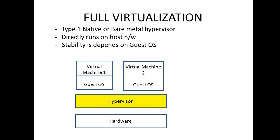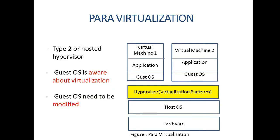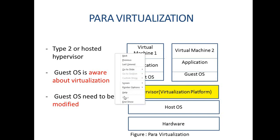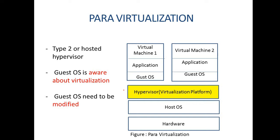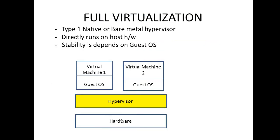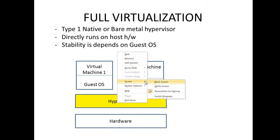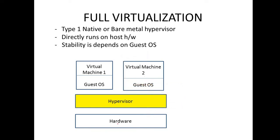For example, if you have one computer and instead of installing an operating system, you directly install the hypervisor on the hardware — that is one method. The other method is installing your own operating system first and then installing the hypervisor on top of it. When the hypervisor is directly installed on the hardware with no OS underneath, that is the full virtualization technique, also known as a Type 1 or bare metal hypervisor.